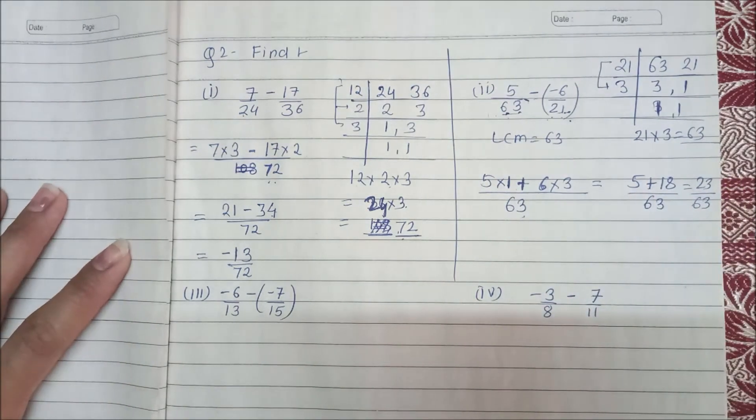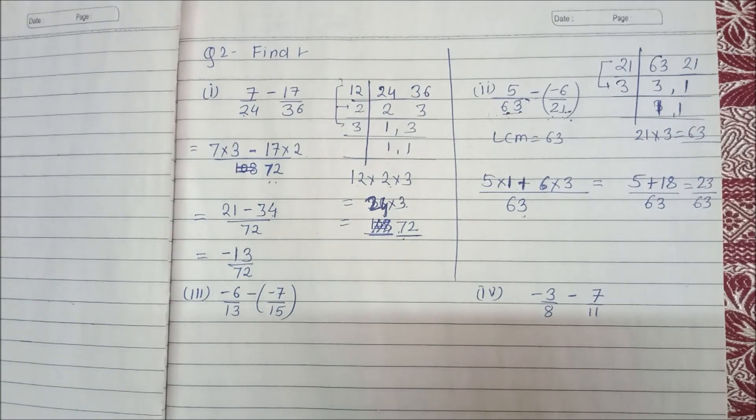And 18 plus 5, how much will it be? 23 upon 63. So 23 upon 63 is our answer.